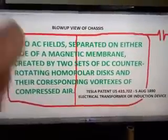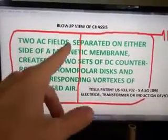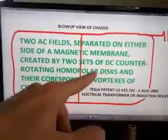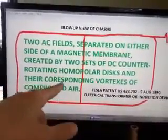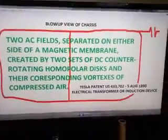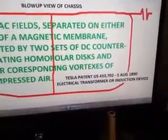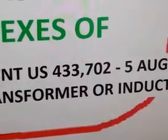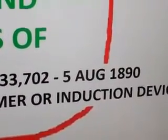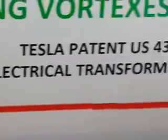So, the blowup of the chassis. Two AC fields separated on either side of a magnetic membrane created by two sets of DC counter-rotating homopolar disks and their corresponding vortexes of compressed air. That's the mechanical version. And it comes off of Tesla's patent, US 433,702, 5th of August 1890, called Electrical Transformer or Induction Device.